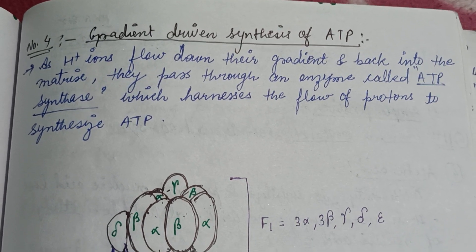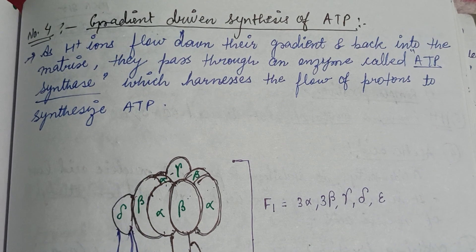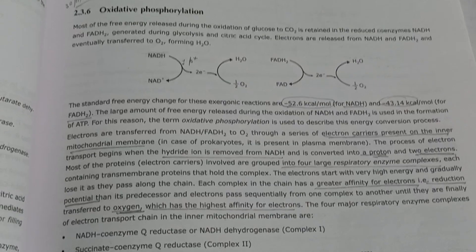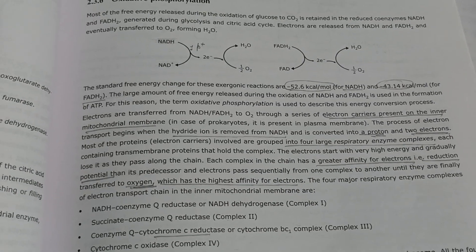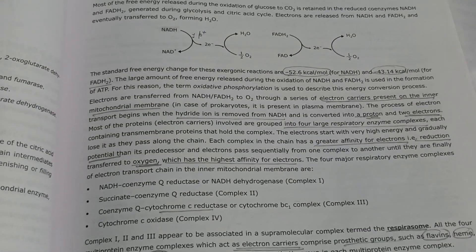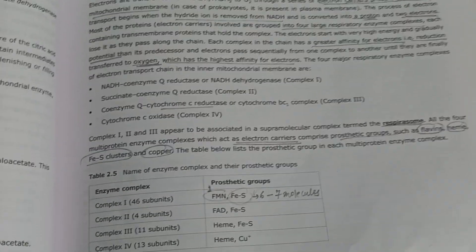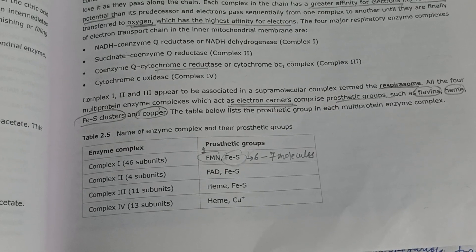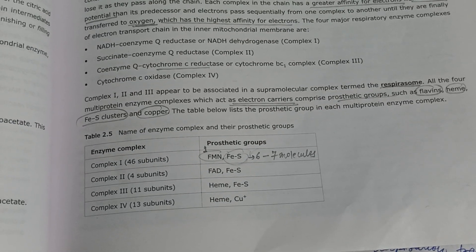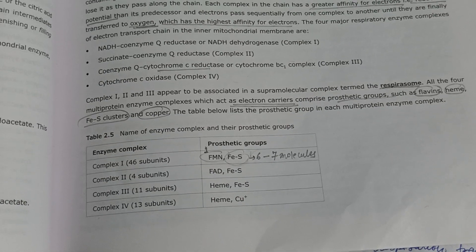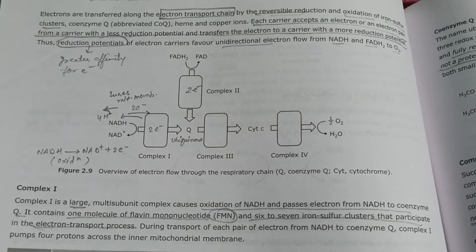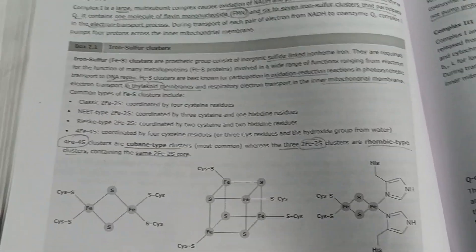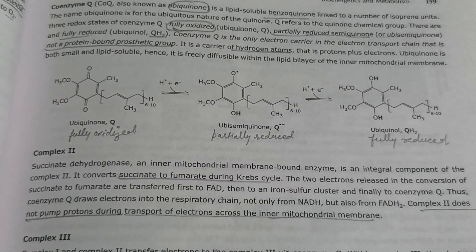The next step is the gradient-driven synthesis of ATP. ATP synthesis occurs due to the proton pumping of complex 5, which is ATP synthase. Here are some pictures to better understand, along with notes from this book. Complex 1 consists of 46 subunits, complex 2 consists of 4 subunits, complex 3 consists of 11 subunits, and complex 4 is made up of 13 subunits. This picture is an elaboration of the mitochondrial electron transport chain.